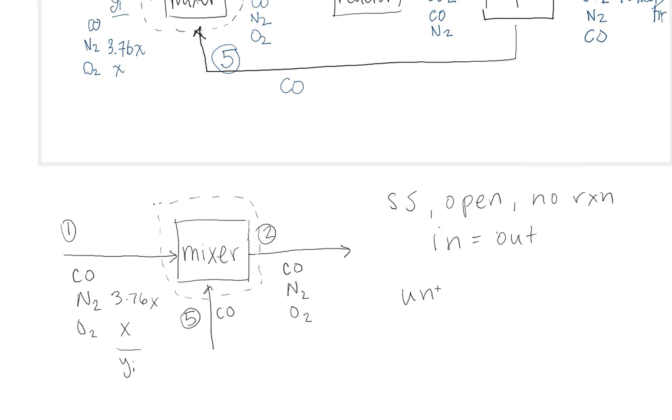So you start off with counting your unknowns. To find the number of unknowns, you just count all of the species in each of the streams that are crossing the system boundary. So here you have 1, 2, 3, 4, 5, 6, 7 unknowns.